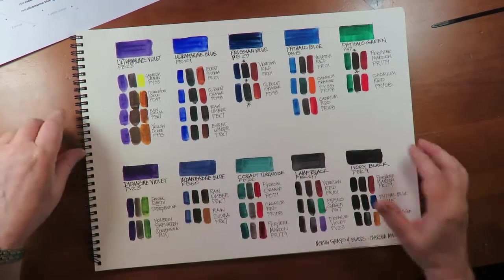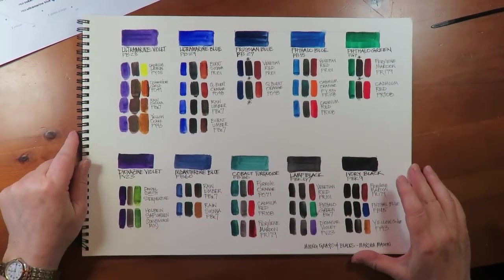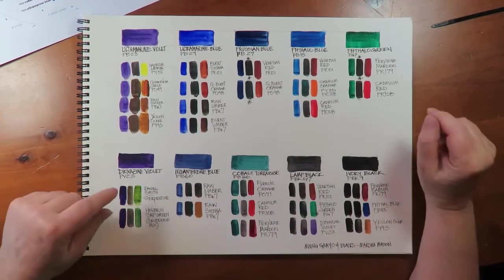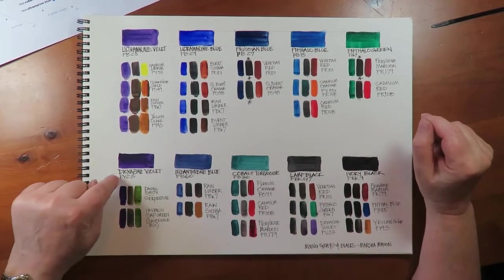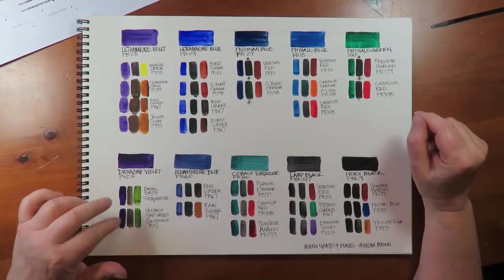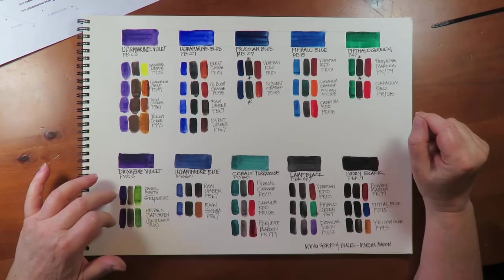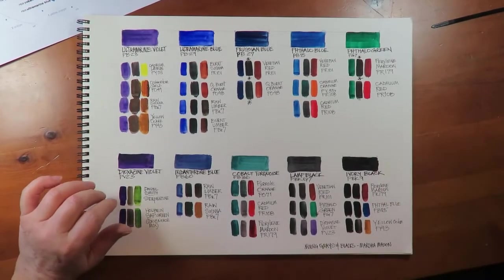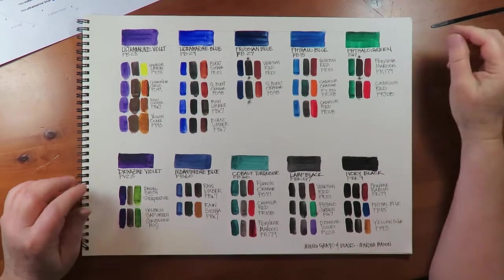Dioxazine violet is a very dark purple to start with and if you've watched my leaf greens videos, you know that that is a great complement to the sap green and to other yellowy greens that you might want to make foliage colors with.